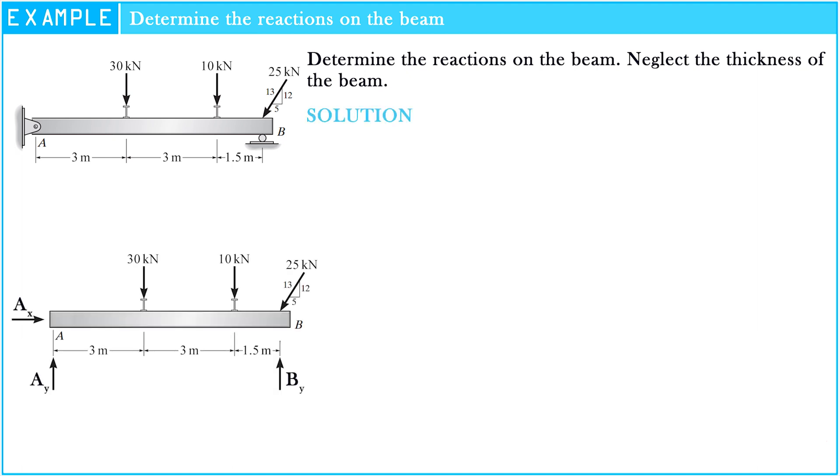First of all, we need to draw a free body diagram of the problem. At point A, we see that it is a pin support, which has two unknowns: AX and AY.